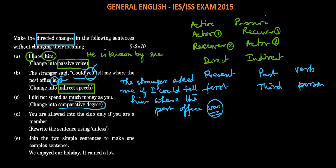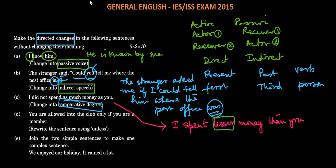Next one: change into comparative degree. Comparative means I have to compare between two, like greater than, lesser than. The sentence says: I did not spend as much money as you. So in comparative form this would become: I spent lesser money than you. Lesser is a comparative term.